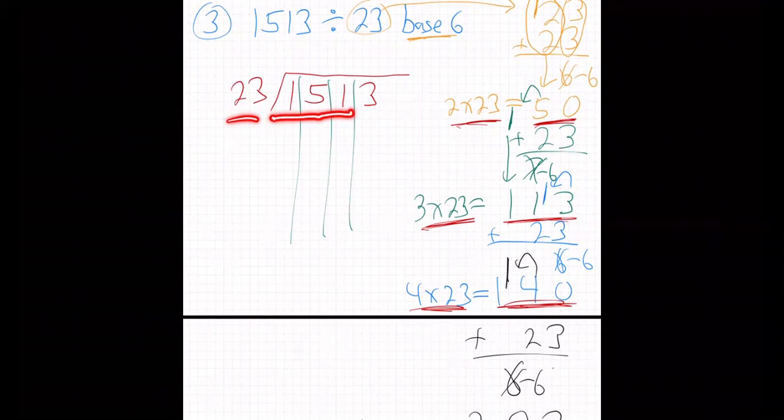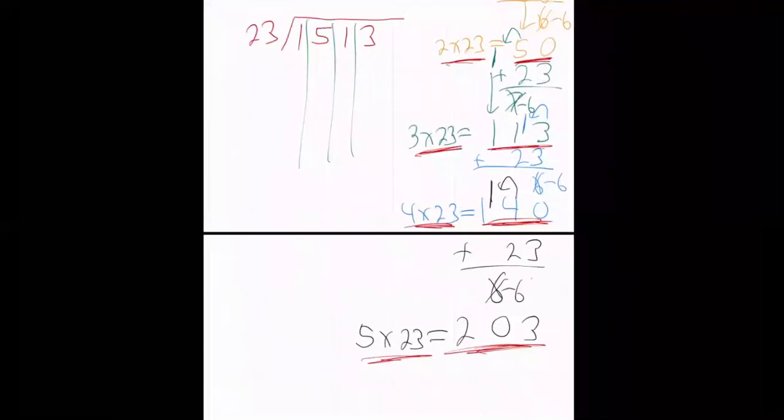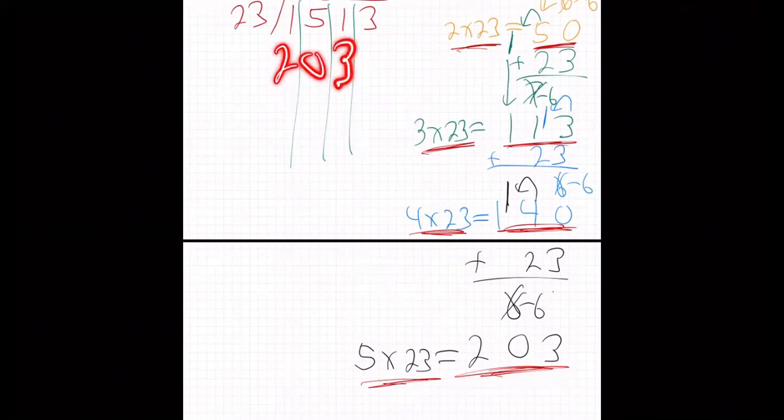How many times does 23 go into 151? Three. It does go three, 113, but it actually goes four also, doesn't it? Remember, you want to do the biggest, whenever you're doing long division, you want to go in the most you can, it doesn't go in five, five would be 203, that's too much, I can't put 203 here, but I can put 140, right, so we're going to do four.